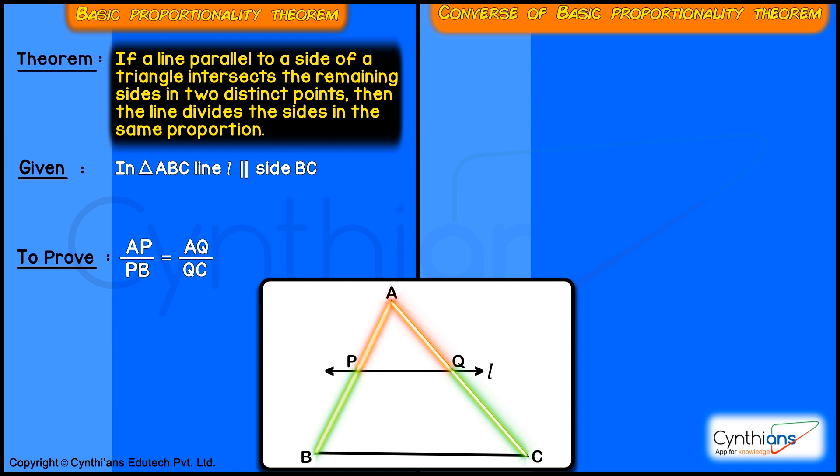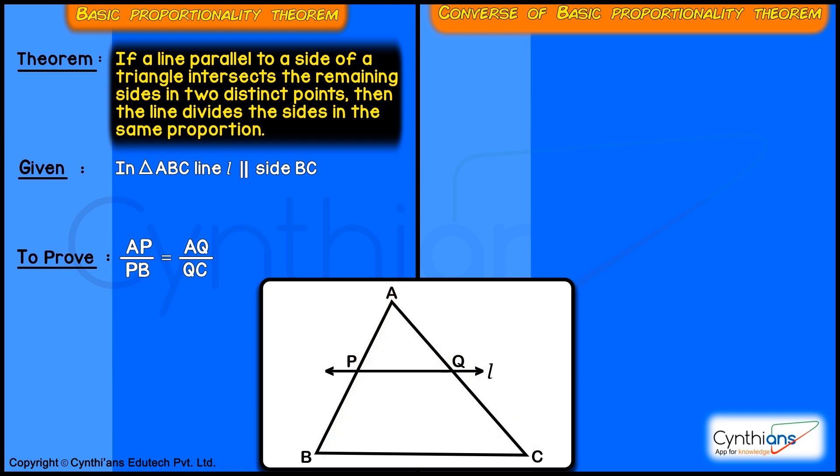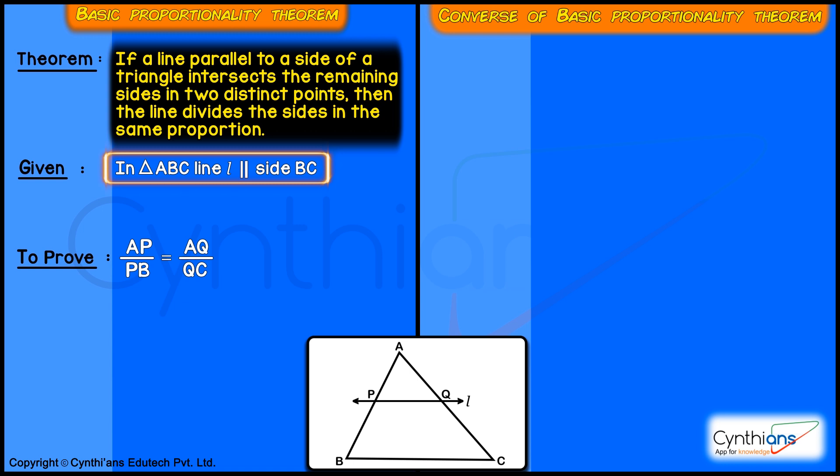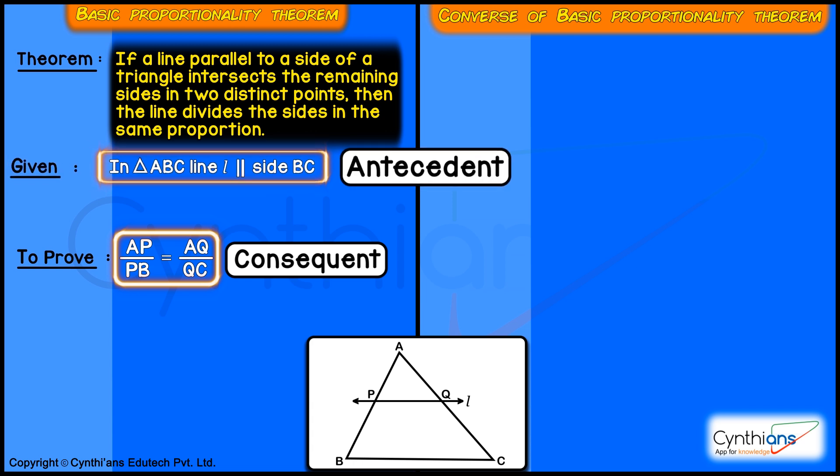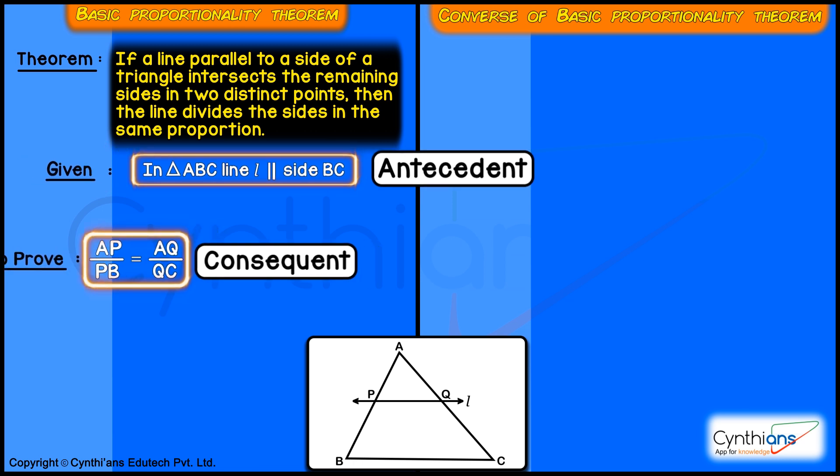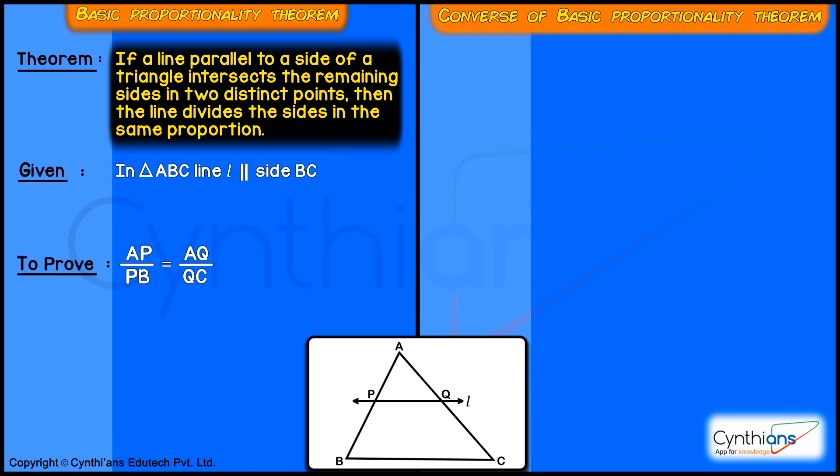This was the basic proportionality theorem. What is the converse? See, this part is called the antecedent and this part is called the consequent. So whenever there's a converse, the antecedent and consequent swap. That means in the converse,